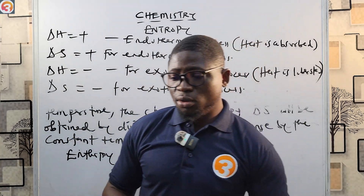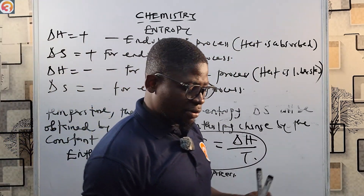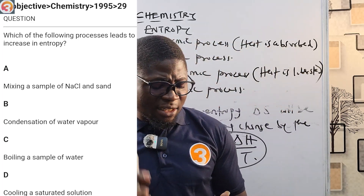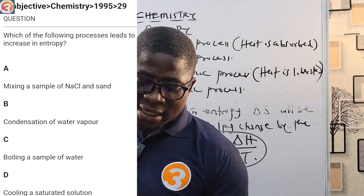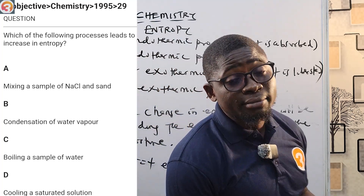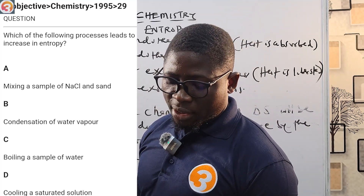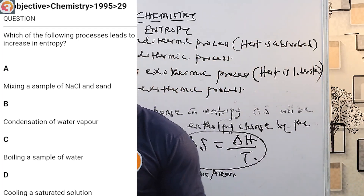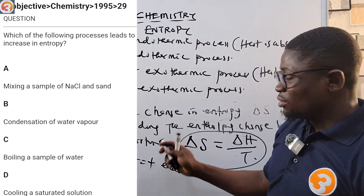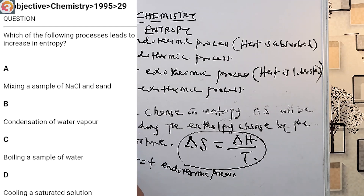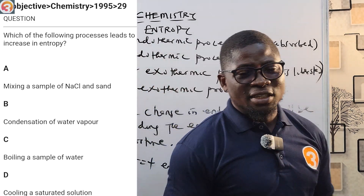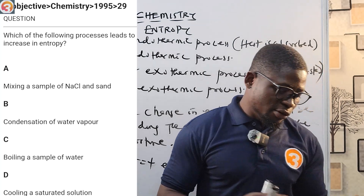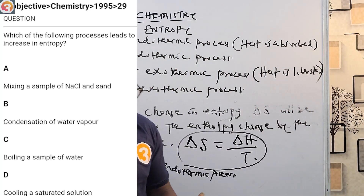Now let's take some past questions. The 1995 question 29: which of the following processes leads to an increase in entropy? Option A — mixing NaCl and sand: incorrect. Option B — condensation of water vapor: entropy decreases. Option C — boiling water: we are increasing temperature and changing from liquid to gas, so this is accompanied by a positive entropy change. Option D — cooling: cannot increase entropy. The correct answer is C.